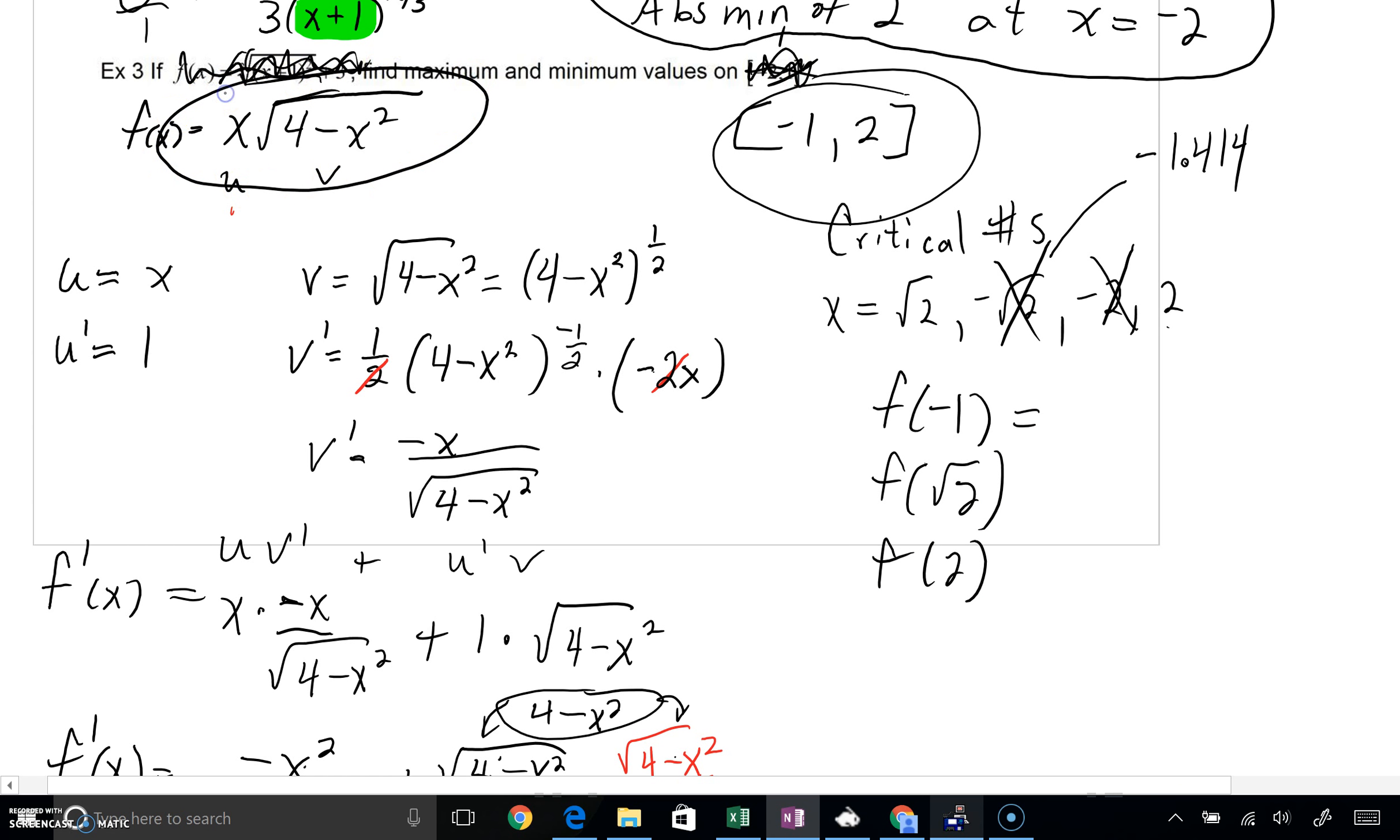I'm going to plug this into the original function. Now if I plug in negative 1, you can see negative 1 squared is 1. 4 minus 1 is 3. So I'd get root 3. I'm going to have a negative out in front. If I plug in a radical 2 here, radical 2 squared is 2. 4 minus 2 is a 2. So I'd be left with a radical 2. I've got a radical 2 out in front. Radical 2 times radical 2 is a 2. And guys, if I plug in a 2 itself, 2 squared is 4. 4 minus 4 is 0. So here I have my extreme values. I can say I've got an absolute min of negative root 3 at x equals negative 1. I can say I've got an absolute max of 2 at x equals radical 2.